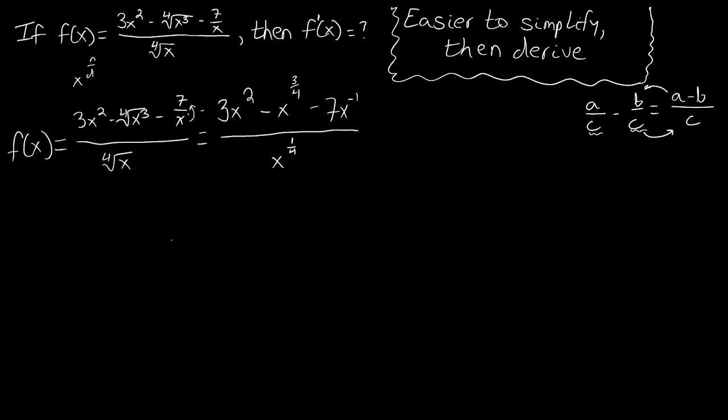How that's going to look is each term in the numerator—3x squared, x to the three-fourths, and 7x to the minus one—is all going to become the numerator of its own fraction. So we have 3x squared over x to the one-fourth minus x to the three-fourths over x to the one-fourth minus 7x to the negative one over x to the one-fourth.